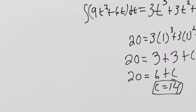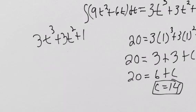So my position function then is 3t cubed plus 3t squared plus 14. That's my position function.